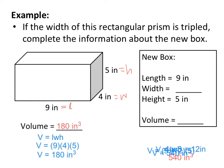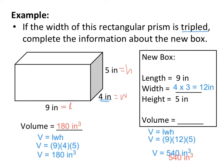When I substitute in the length, width, and height, I get volume equals 9 times 4 times 5, and that is equal to 180 inches cubed. That is our volume for this first box. Now for our new box, the width is tripled. If our original width is 4 inches and we triple it, our new width will be 12 inches. Substituting in 9 times 12 times 5, the volume of the new box is 540 inches cubed.